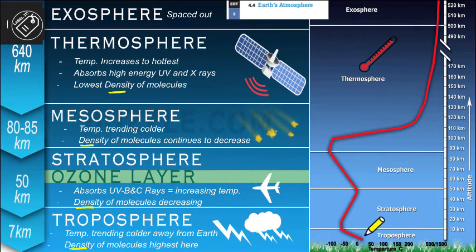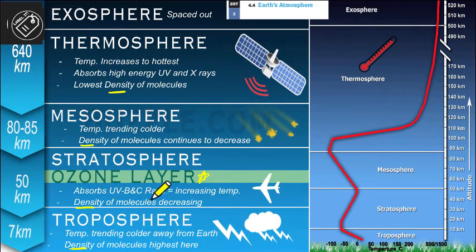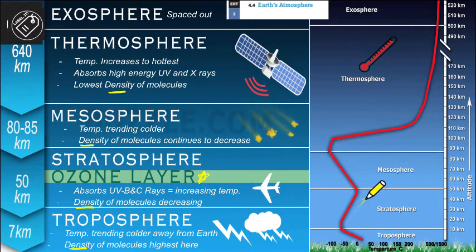The density of molecules is highest in the troposphere, and the density trend is decreasing all the way through. Temperature kind of zigzags. The next layer is the stratosphere, where the ozone layer is present — that's noteworthy and will come up later. The ozone layer absorbs UVB and UVC rays, and we have increasing temperature in the stratosphere after the decrease in the troposphere.